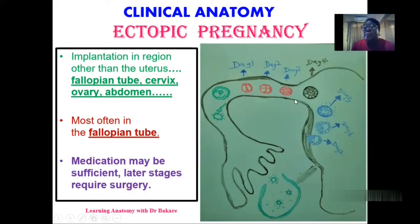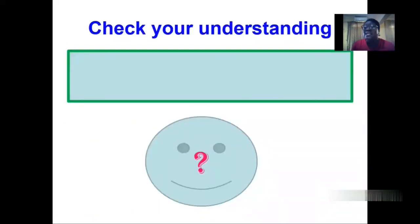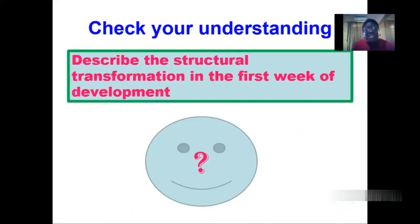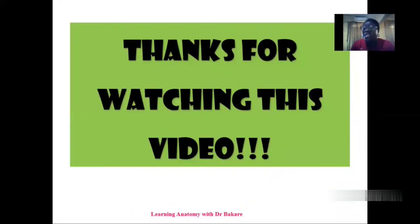When tubal pregnancy occurs, medication may be enough, but when detected at a later stage, there may be a need for surgery. Let's check our understanding of this lecture: describe the structural transformation seen in the first week of development. We've highlighted this in detail during the course of this lecture — I'll be expecting your answers in the comment section. Thanks for watching this video.